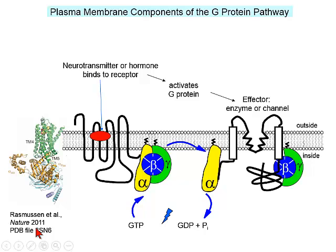This is a very basic discovery. We have a neurotransmitter or a hormone binding to a receptor with seven transmembrane helices — sometimes the neurotransmitter binds deep inside the membrane, sometimes outside. This activates the G-protein. The G-protein has a cycle with three subunits that participate in binding GTP — that's why we call it a G-protein.